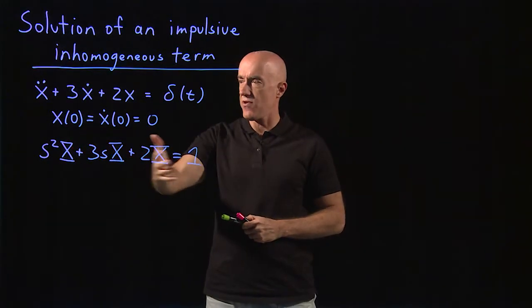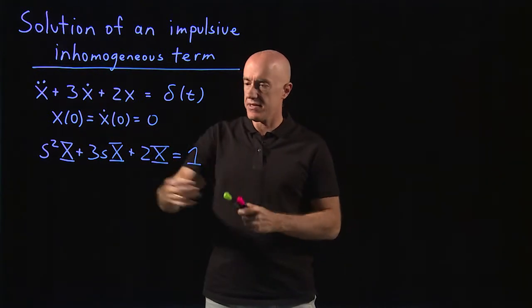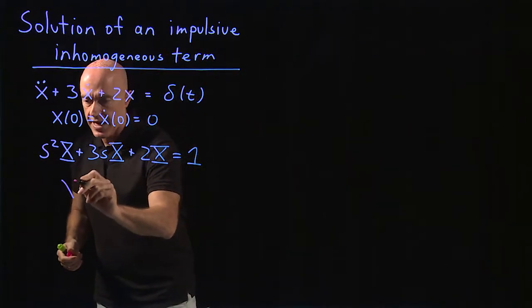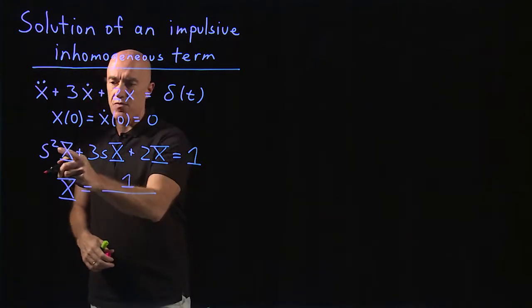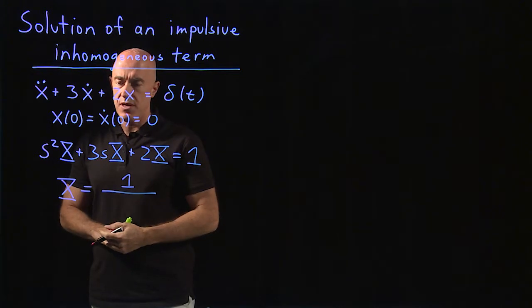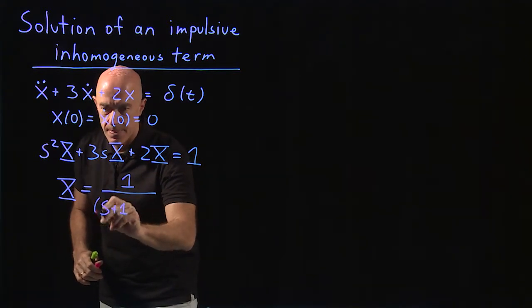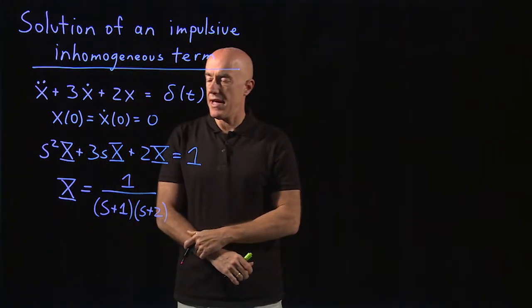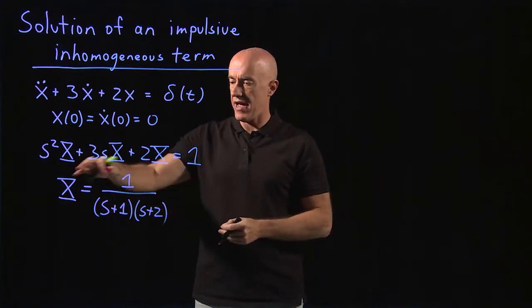So we have the Laplace transform of the differential equation. This is our algebraic equation. We can solve for x, so x equals 1 over, we have s squared plus 3s plus 2. That factors into s plus 1 times s plus 2. That's our solution in s space for x of s.